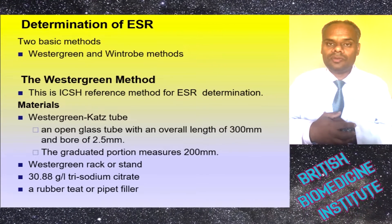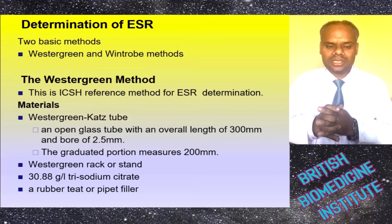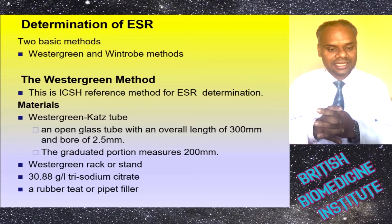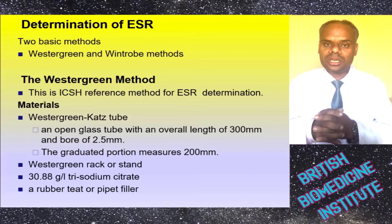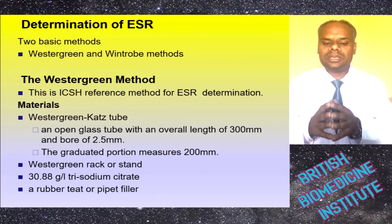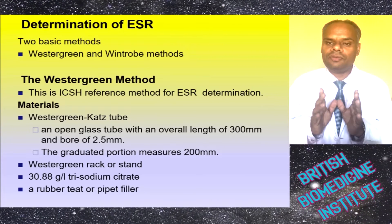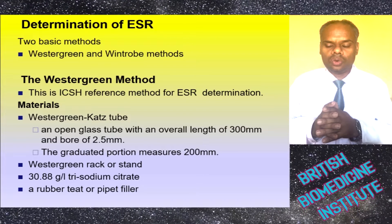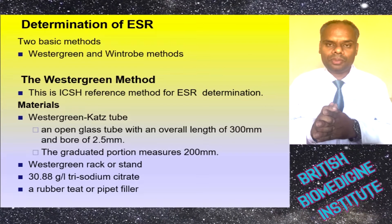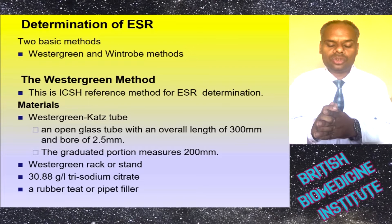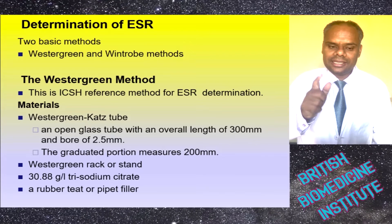ESR determination can be done by two basic methods: the Westergren method or the Wintrobe method. The Westergren method is the ICSH reference method for ESR determination. Materials required include the Westergren tube — an open glass tube with an overall length of 300 mm, a bore of 2.5 mm, and a graduated portion measuring 200 mm — a Westergren rack or stand, 3.8% trisodium citrate, and a rubber teat or pipette filler.